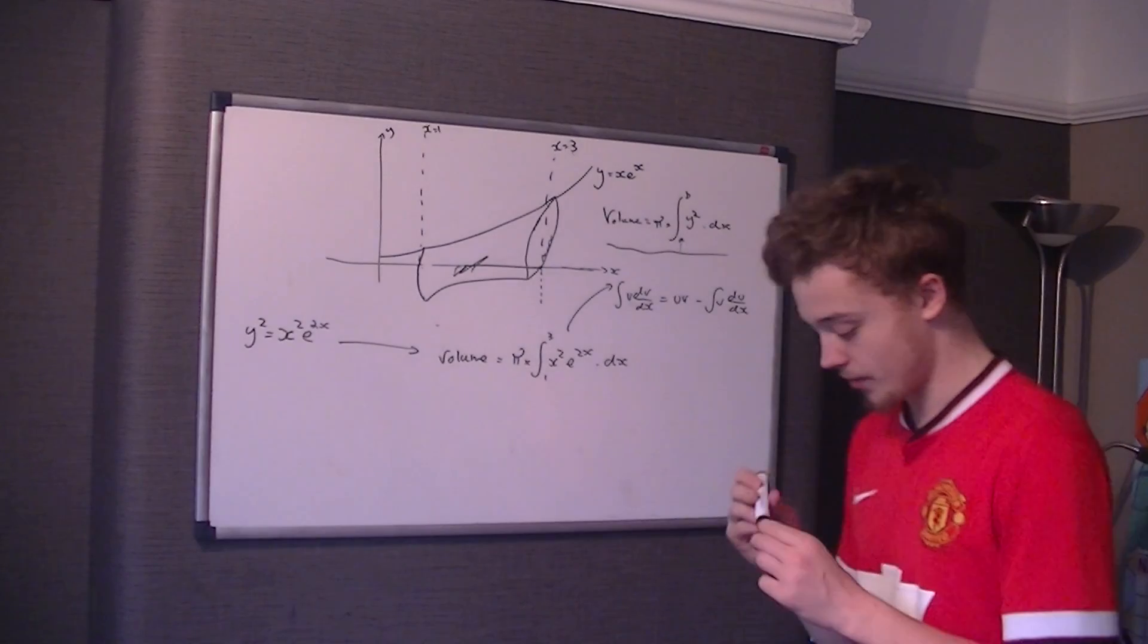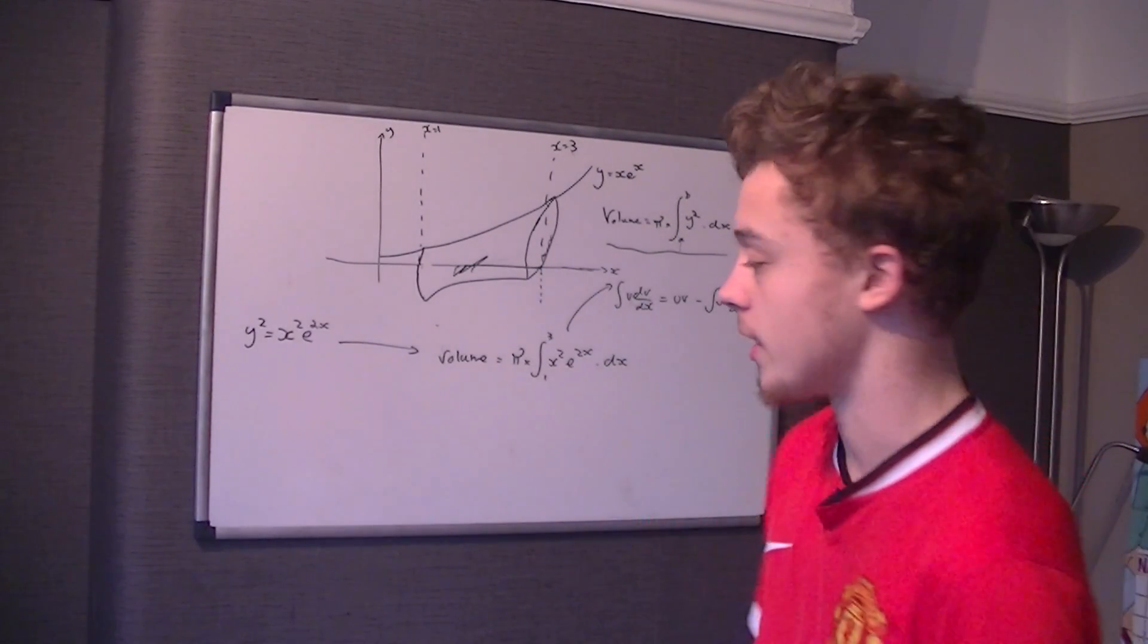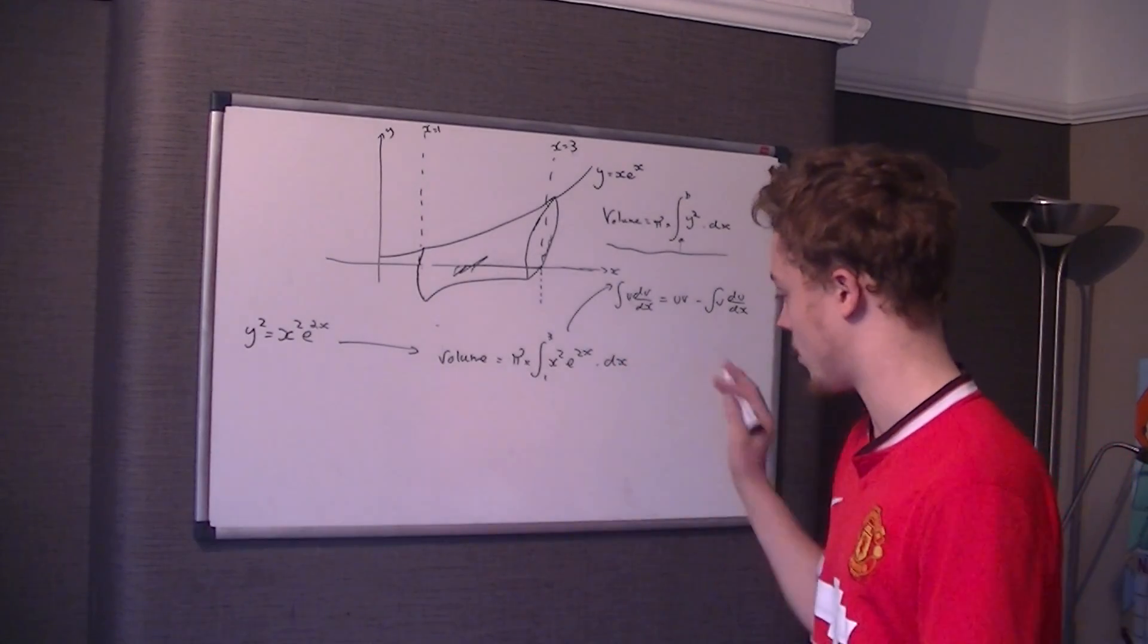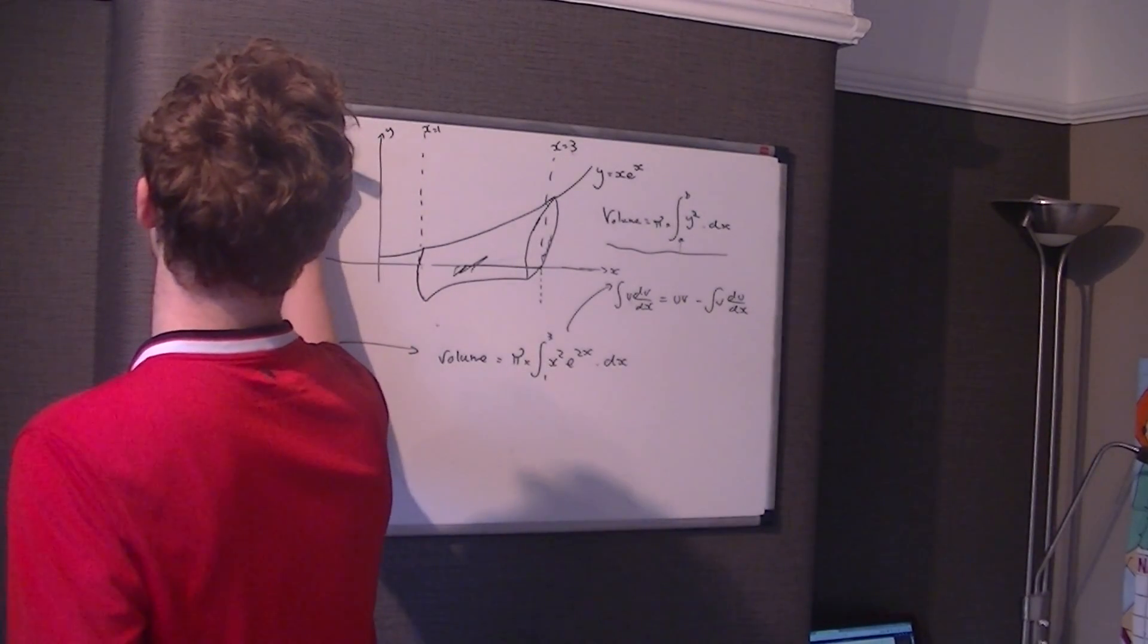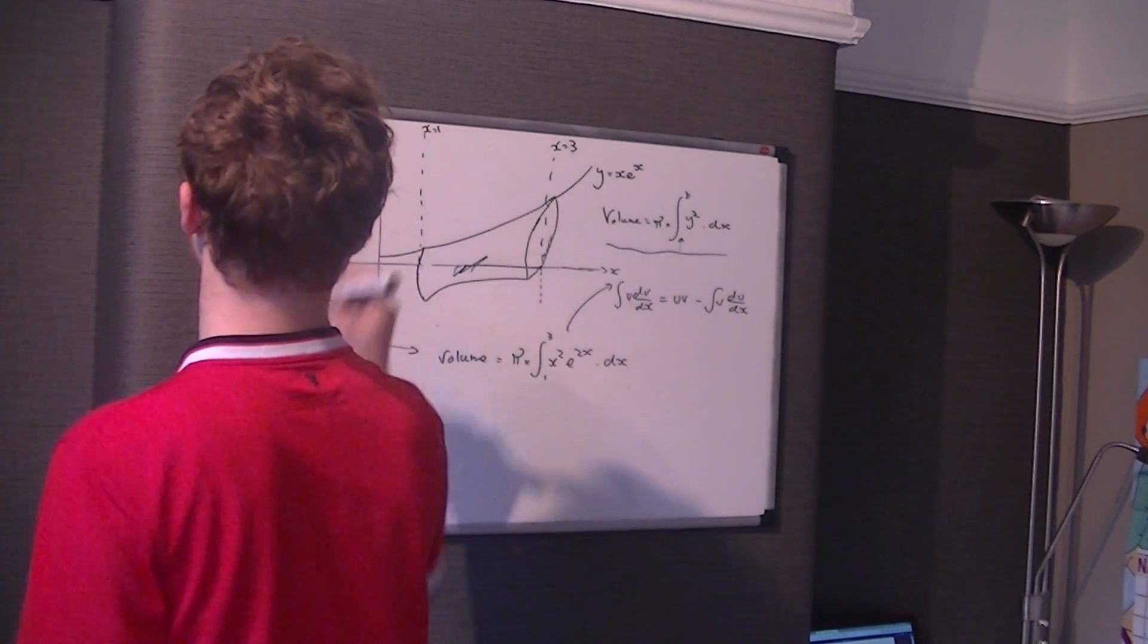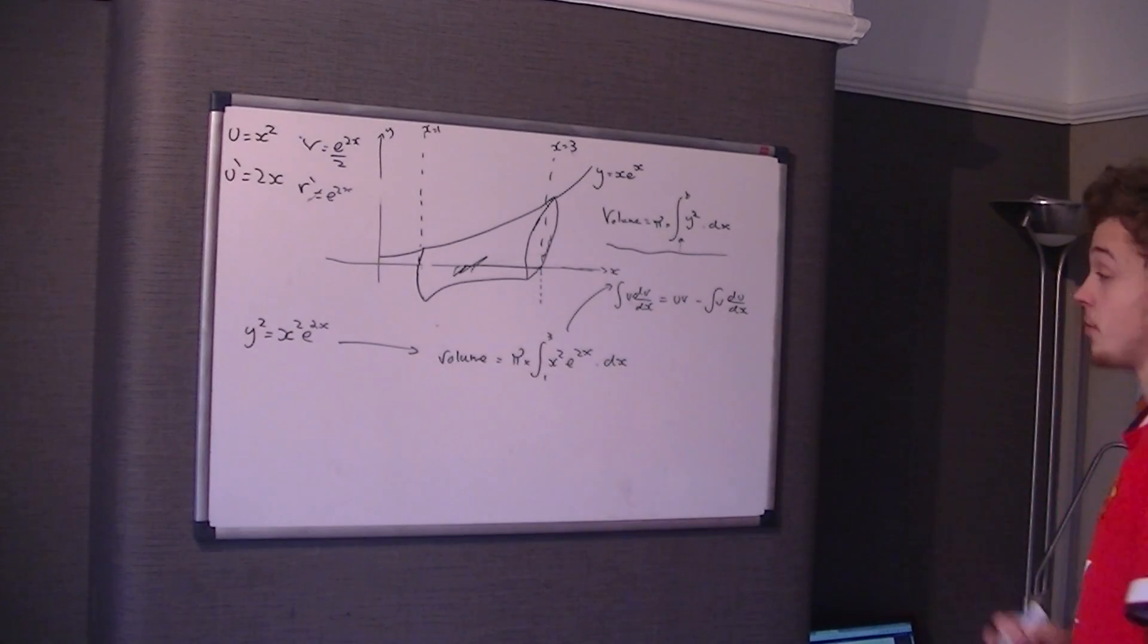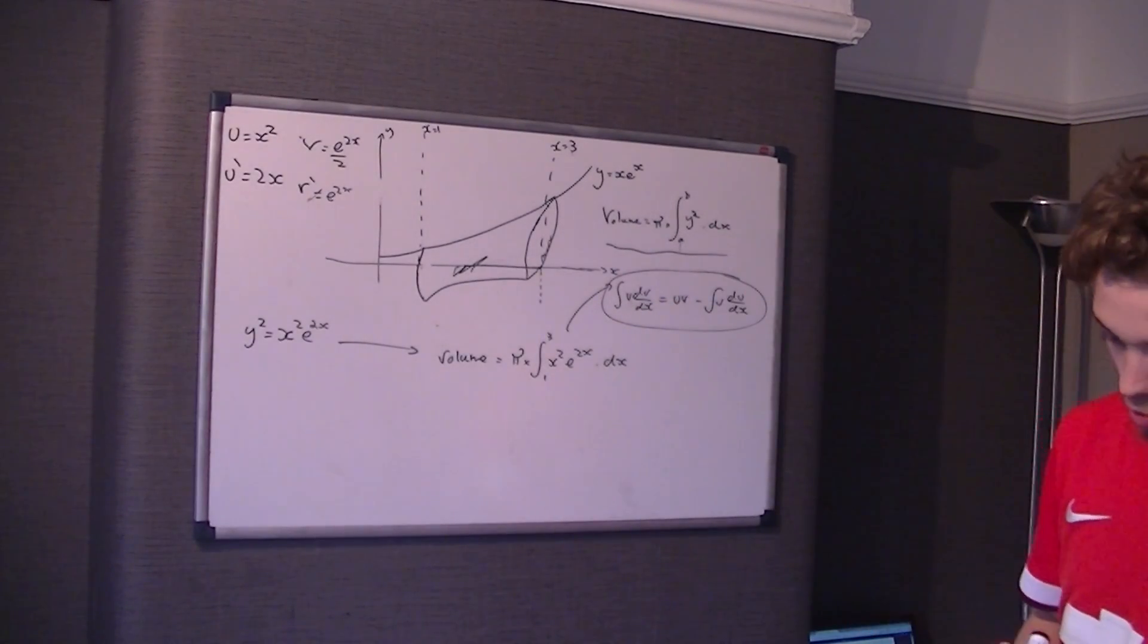If you remember, integration by parts is the integral of u dv/dx equals uv take the integral of v du/dx. Now we've got to remember our LATE rule, which says u will always be the first one unless you include a log in there. Our algebra comes before our exponential in LATE, so our u is going to be x squared. Therefore our u dashed is 2x, and our v dashed is e to the 2x, so our v is the integral of e to the 2x, which is e to the 2x on 2, or half of e to the 2x.